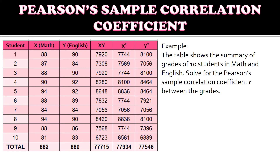Let's compute for the Pearson's correlation coefficient. We have a table showing the summary of grades of 10 students in math and English — x for math and y for English — to solve for the Pearson's sample correlation coefficient between the grades. We already computed the product of x and y, the values of x multiplied by the values of y, then the square of x and the square of y. These are the values we need to compute the correlation coefficient.